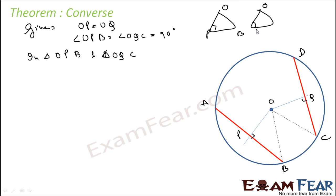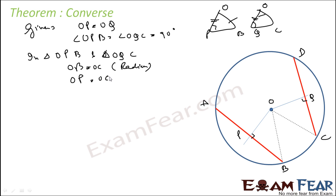In triangles OPB and OQC: OB is equal to OC — they are radii. OP is equal to OQ — given. Angle OPB is equal to angle OQC, both equal to 90 degrees.